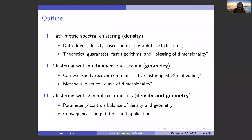I'll give an overview of a few different research projects related to this. First, pathmetric spectral clustering — a method which really emphasizes the density in the data. We use a data-driven density-based metric combined with graph-based clustering, and I'll discuss the nice theoretical guarantees, some fast algorithms, and the blessing of dimensionality.